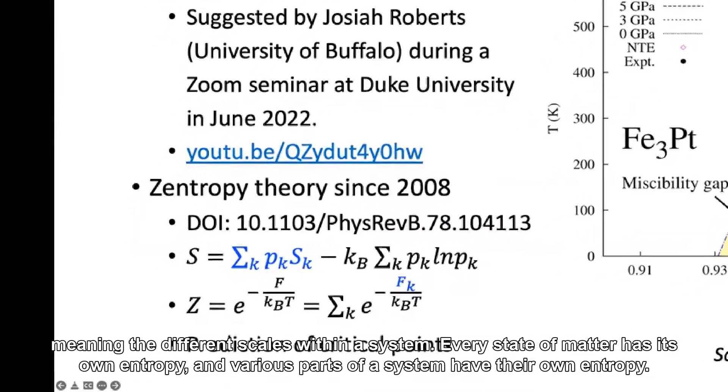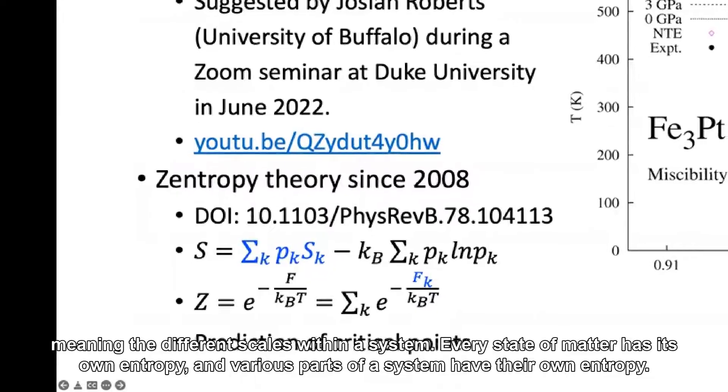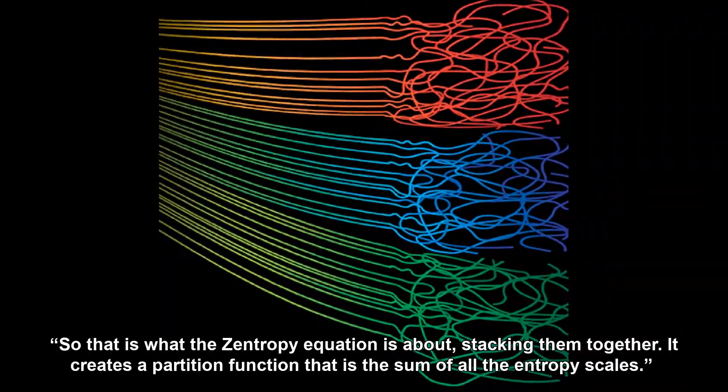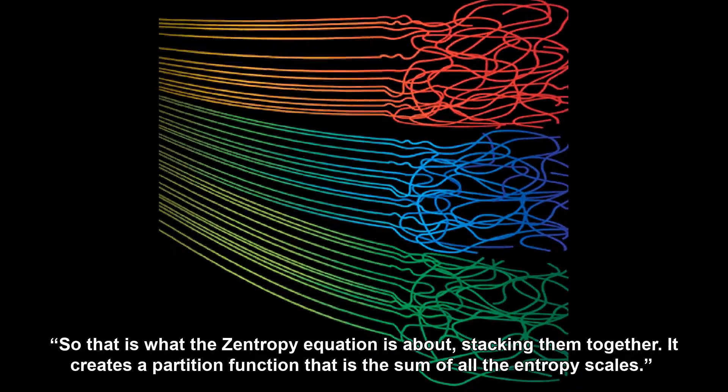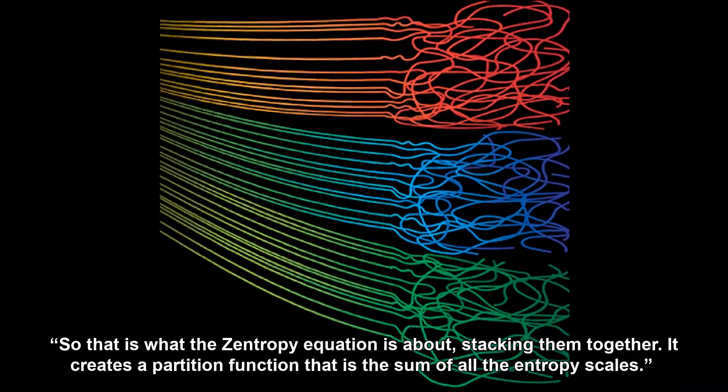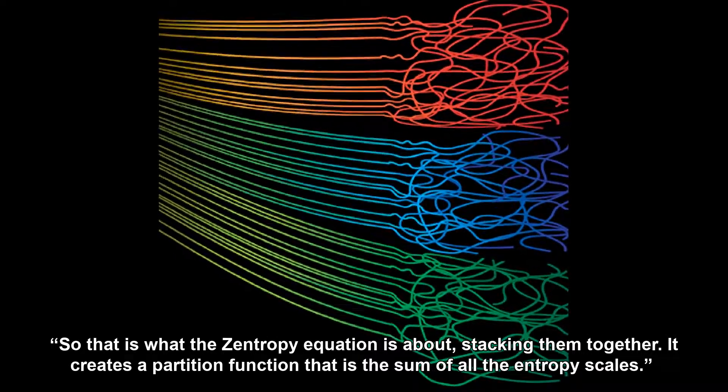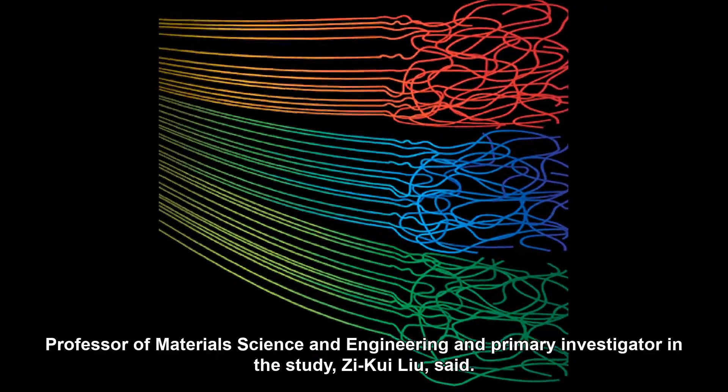Every state of matter has its own entropy, and various parts of a system have their own entropy. So that is what this Zentropy equation is about, stacking them together. It creates a partition function that is the sum of all the entropy scales.